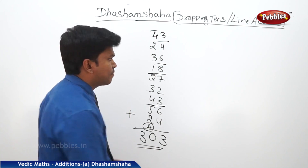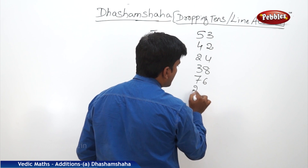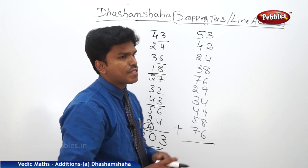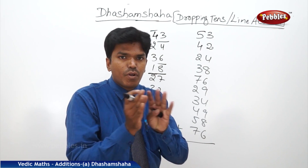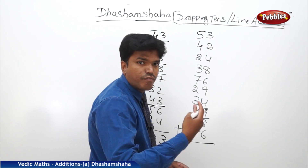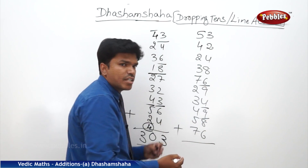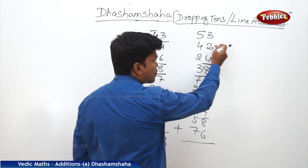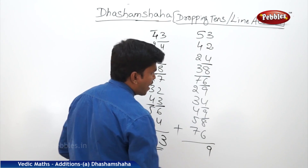Let us take one more example: 53, 42, 24, 38, 76, 29, 34, 49, 58, 76. We have to add these numbers. Start from the right side. This time I will go a little faster — keep concentrated. 6 plus 8 is 14 — remaining 4. Carry 4 to next. 4 plus 9 is 13 — drop 10, carry 3. 3 plus 4 is 7, then 9, 16 — remaining 6. Then 6, 6, 12 — drop 10, remaining 2. 2 plus 8 is 10 — remaining 0 — start freshly. 4 plus 2 is 6, 6 plus 3 is 9. Lastly remaining is 9. Count tens: 2 plus 3 is 5. Carry 5 to the next line.